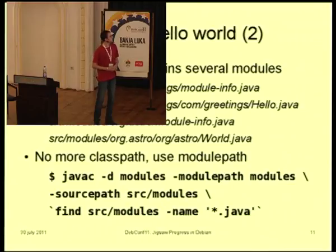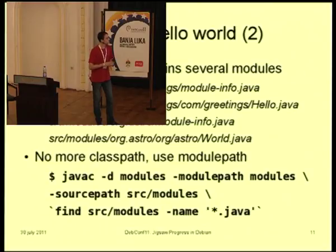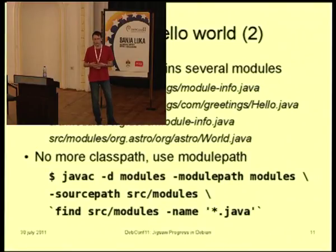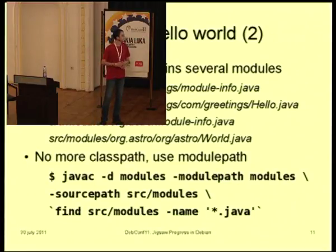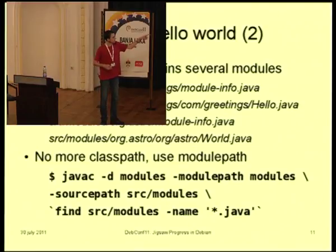We can compile a module, and we can actually compile two modules in one command line. We don't need the class path of Java anymore — the class path is replaced by the module path. JavaC is still the compiler. The -d flag is the directory where the module will be compiled, -modulepath is the module path where the modules of the JVM are, and then -sourcepath is where the sources are, followed by the Java files. With this, we are going to have class files in the modules directory.